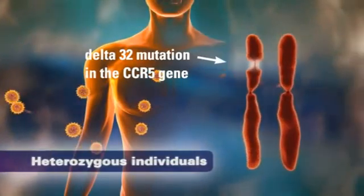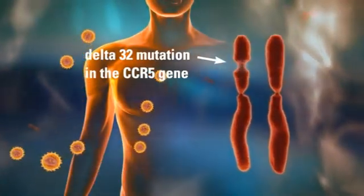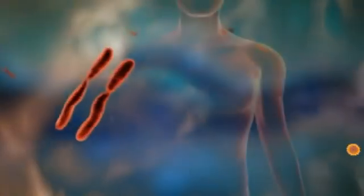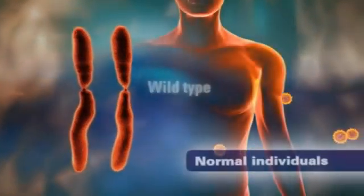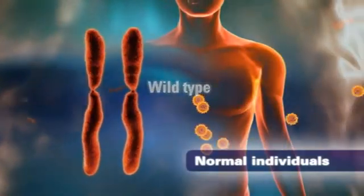Delta 32 heterozygous individuals carrying one functional CCR5 gene, while still susceptible to HIV infection, display a delayed progression of the disease compared with normal individuals who have two functional copies of the gene.